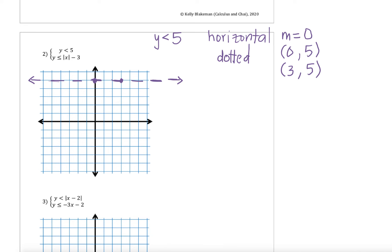The last thing we need to do with this part is test a point. Go ahead and test (0,0): pause the video and determine if that will be a true or false statement. When we test (0,0), we're checking: is 0 less than 5? Since there's no x to sub in, I'm just subbing the 0 for y. Zero is less than 5, so this is a true statement, which means I shade on the side where (0,0) is — below this purple line. I'll draw arrows to remind me of the direction of the shading.